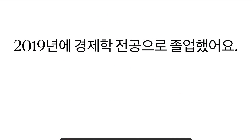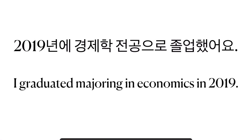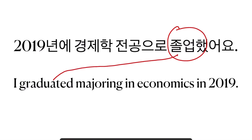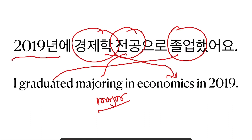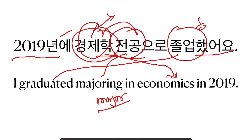Let's see the next sentence: 2019년에 경제학 전공으로 졸업했어요. I graduated in 2019 with a major in economics. You can change 경제학 to whatever subject you want. 졸업했어요, or 졸업할 거예요 — I will graduate.